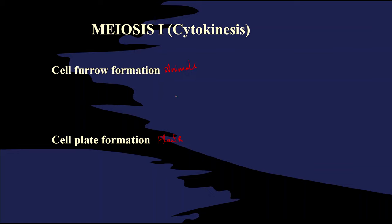The cell will be separated. Coming to cell plate formation, the spindle will persist for some time. The spindle which was formed during karyokinesis persists for some time — that is known as the phragmoplast.